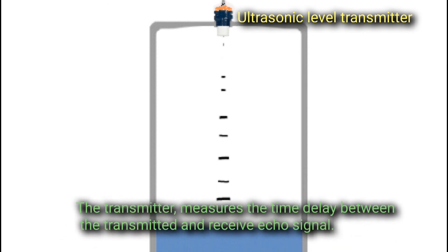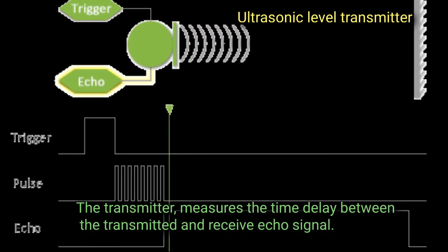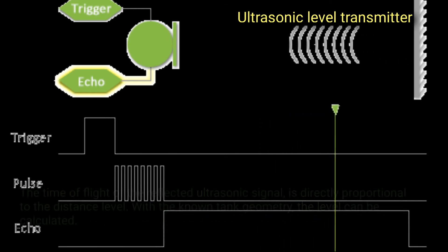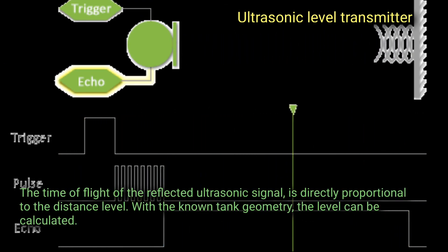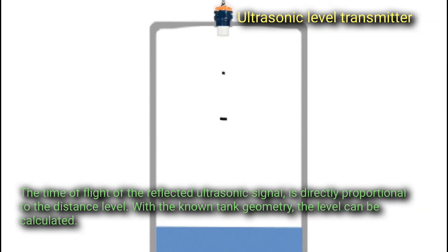The transmitter measures the time delay between the transmitted and received echo signal. The time of flight of the reflected ultrasonic signal is directly proportional to the distance levels. With the known tank geometry, the level can be calculated.